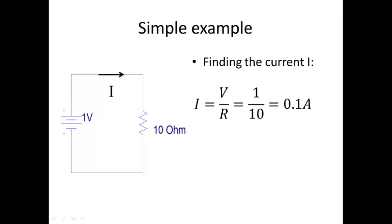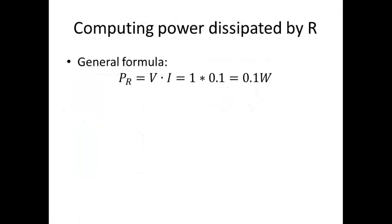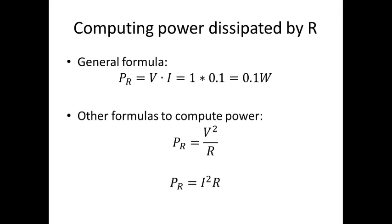We can also find the rate of energy being dissipated by the resistor — in other words, the power. There is a general formula to compute the power dissipated by a resistor: we multiply the voltage across the terminals times the current flowing through it. In this example, V is one volt and the current is 0.1 amps, so we get 0.1 watt. There are different ways to calculate power: V squared divided by R, or I squared times R. Sometimes we know the voltage and the resistance, or sometimes the current and resistance, and either is enough to find the power.